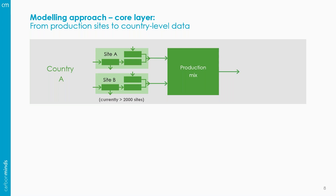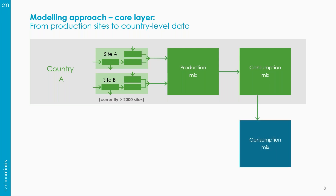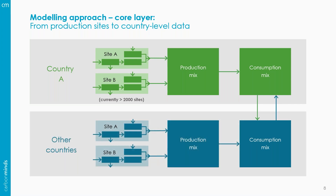After modeling each production site, we calculate the national production mixes. Because the production mix of a chemical does not always reflect the consumption mix in that country, we then calculate the consumption mix, which takes into account regional production and international trade. The consumption mix is represented by the sum of a country's production mix, minus exported chemicals, plus imported chemicals. Only by modeling the chemical industry in every single country and connecting them with trade data can we generate this database.